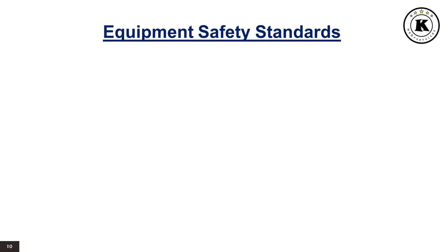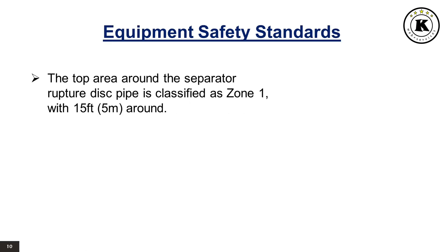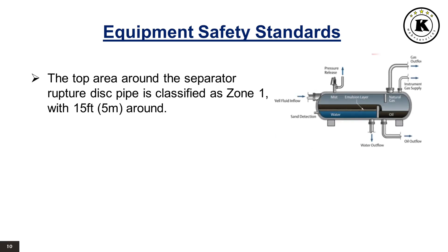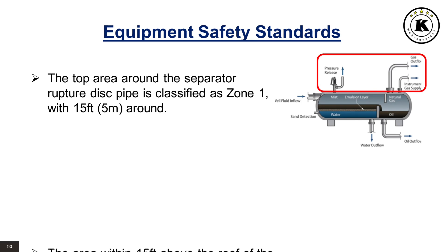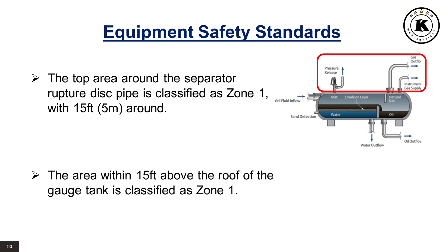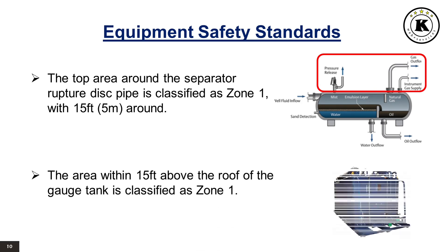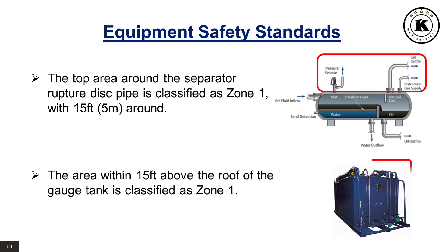Equipment safety standards: The area around the separator rupture disc pipe is classified as Zone 1, with 15 feet or 5 meters around it. The area within 15 feet above the roof of the gauge tank is also classified as Zone 1.